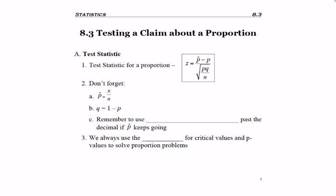After we found H0 and H1, we always want to find a test statistic. When we're finding a test statistic for a proportion, we have the formula: Z equals P-hat minus P divided by the square root of P times Q divided by N.